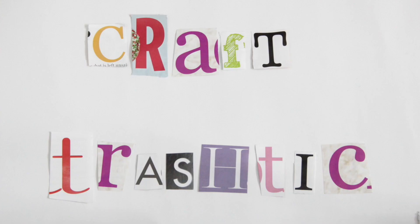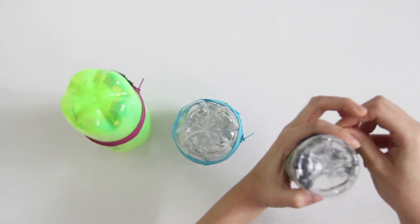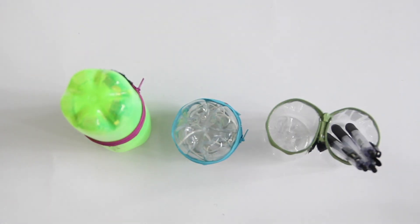Hello! This is Craft Trash Tick and today we will be making puddles! Puddles are made from recyclable bottles that can be used as a pen holder.